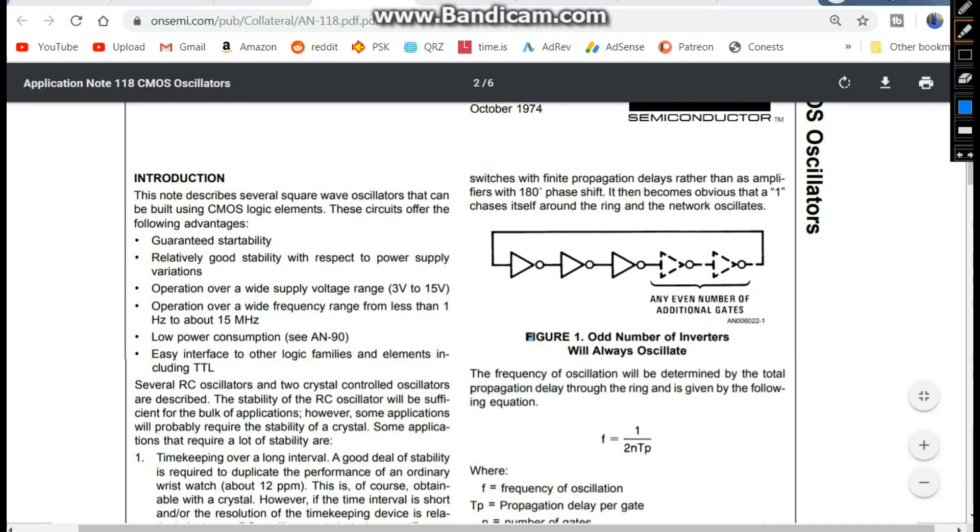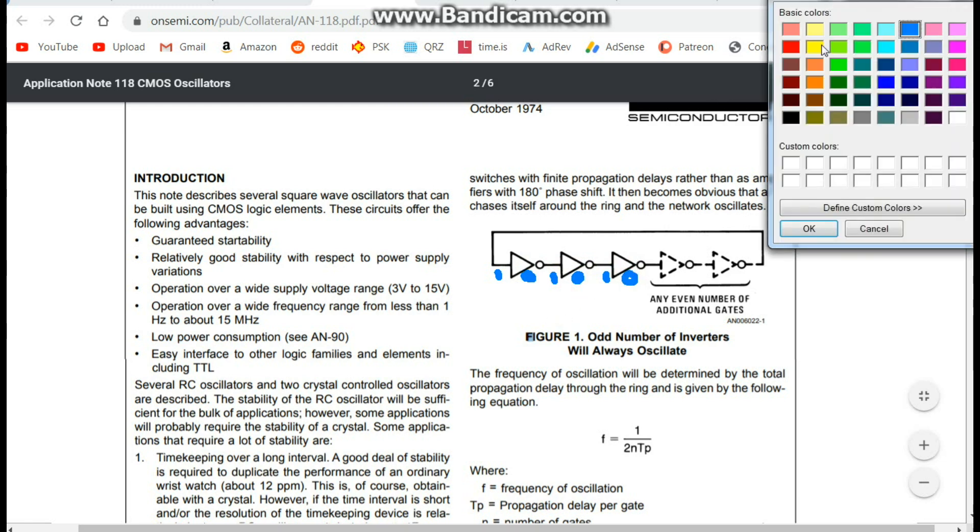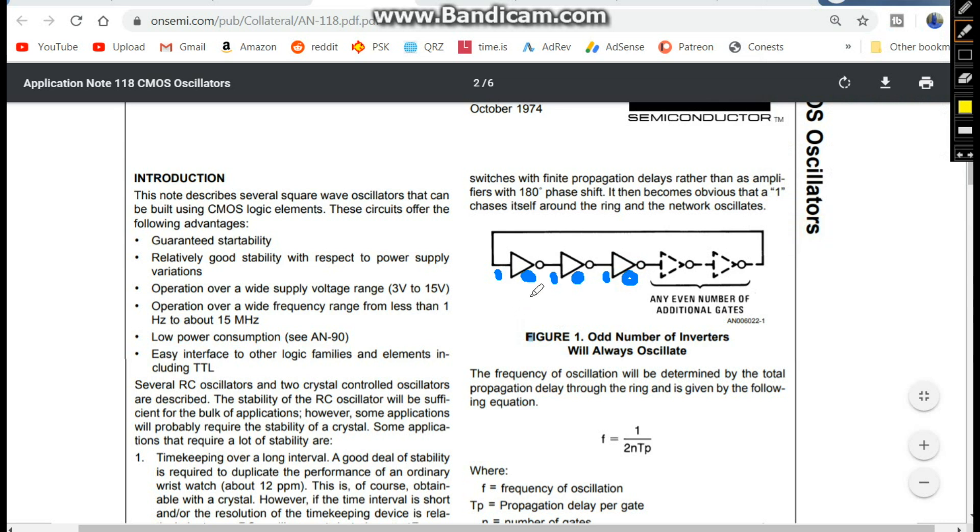Now, the propagation delay, so here we have our input, output, input, output, input, output, input. And there is a specific amount of time that it takes for the signal to go through that gate, and then go between this gate and this gate, and then there, and then this gate and this gate, and then go through it.